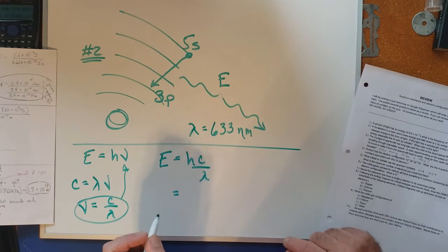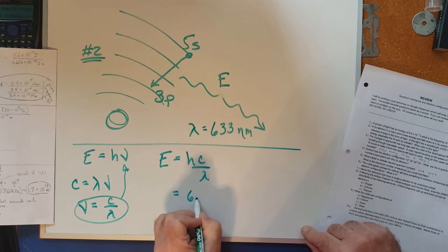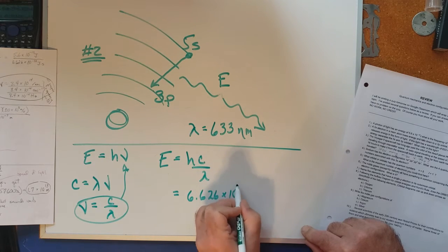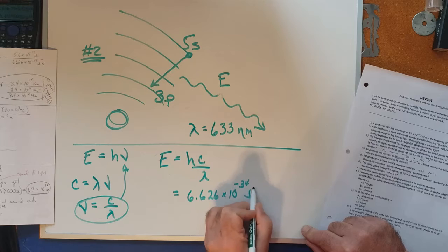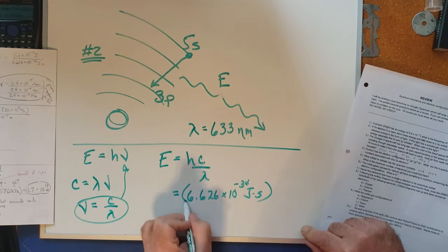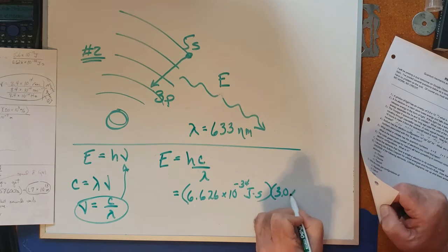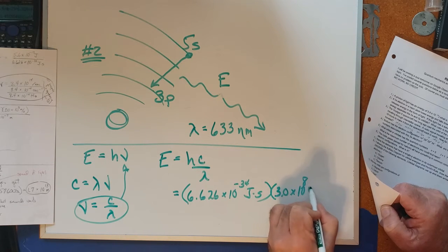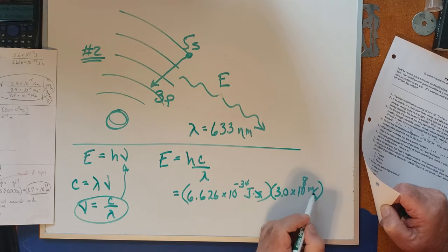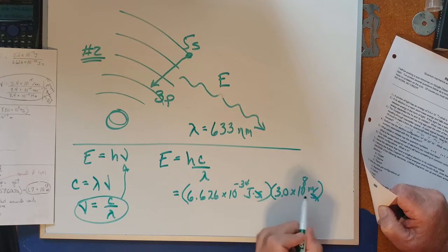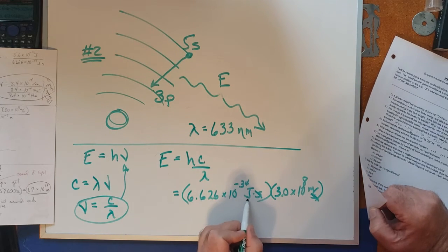Let's throw some numbers in here. 6.626 times 10 to the minus 34 joules times seconds, that's Planck's constant. The speed of light, which is 3.0 times 10 to the eighth meters per second. Notice the seconds cancel with the per seconds.